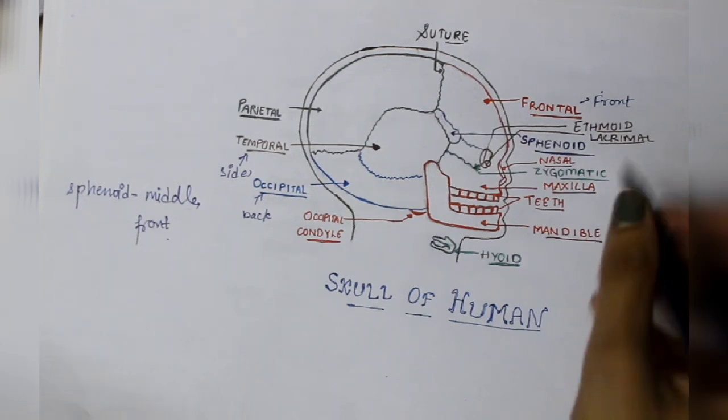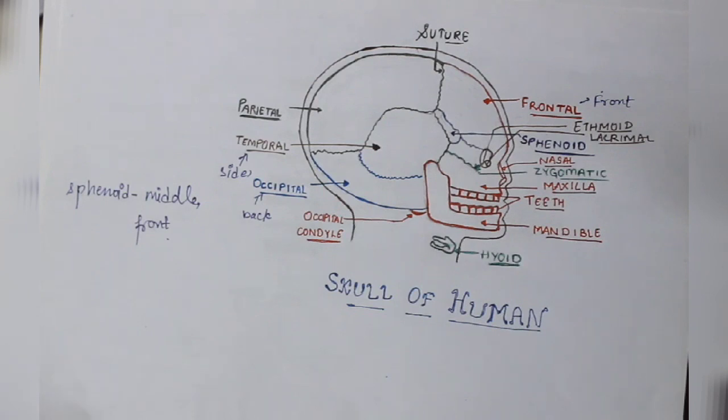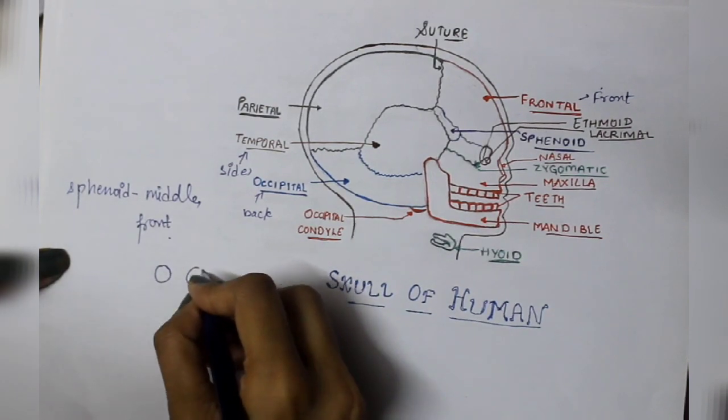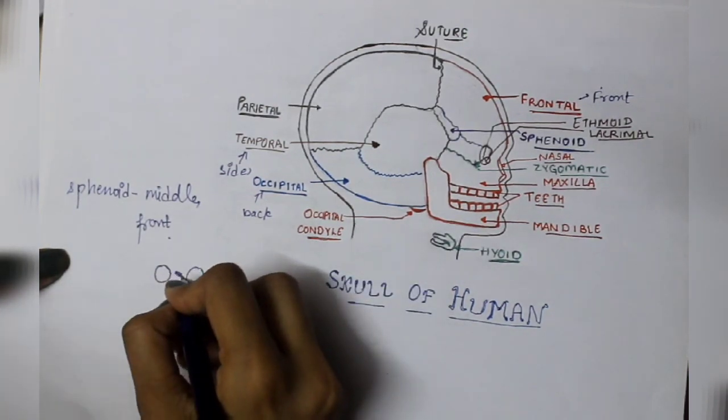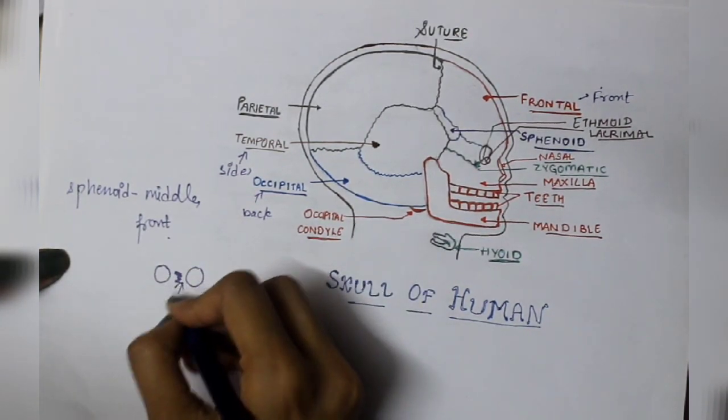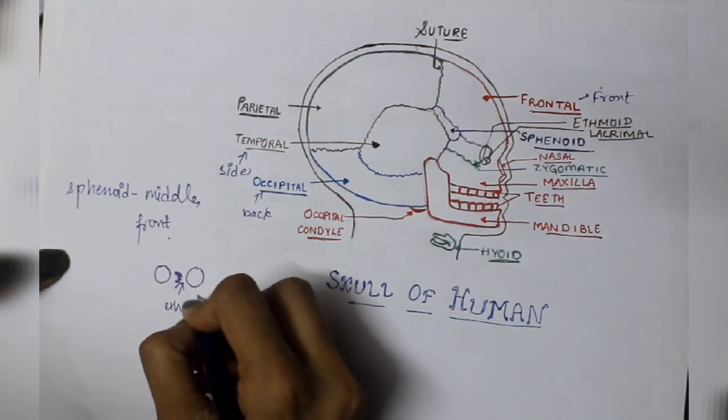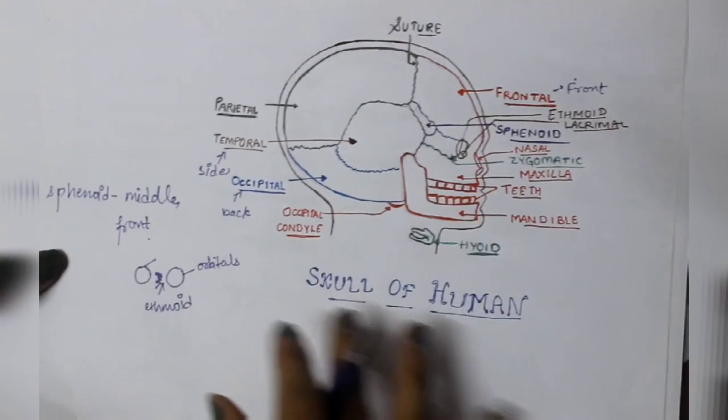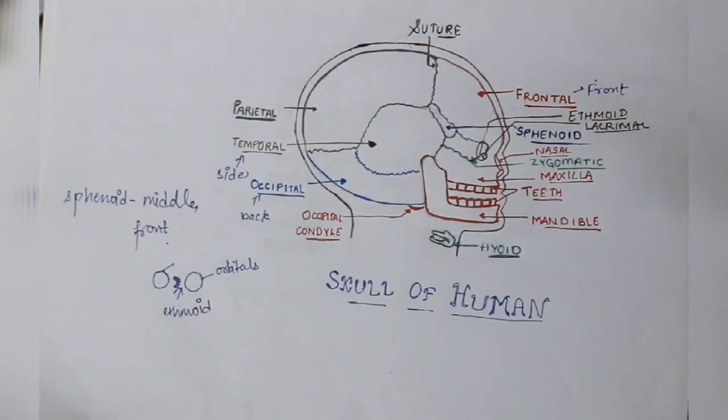Which bone after this is the ethmoid bone. Ethmoid bone is present in both orbitals. Then frontal, temporal, parietal, occipital, sphenoid, and ethmoid bone.